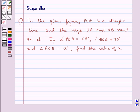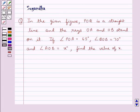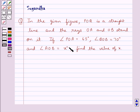Hello and welcome to the session. In this session we discuss the following question: In the given figure, POQ is a straight line and the rays OA and OB stand on it. If angle POA is equal to 65 degrees, angle QOB is equal to 70 degrees, and angle AOB is equal to X degrees, find the value of X.